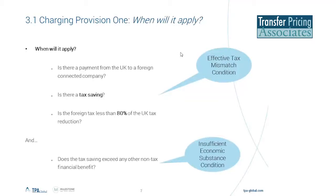For example, you'll get a UK tax deduction at 20% in respect of that payment. Where there was no tax on receipt in the foreign territory, you'd have a 20% tax saving. If, however, you had 5% withholding tax on that payment from the UK to the foreign company, then your tax saving would reduce by 5%. So you're looking at your UK deduction, any withholding taxes, and then the tax paid in the foreign territories. The amount of the tax saving does matter, because we have what's called an 80% test. You can potentially escape the DPT if the tax saving is at least 80% of the UK tax reduction — in other words, any withholding tax or foreign tax together would need to be at an effective 16% tax rate in order to escape the charge.